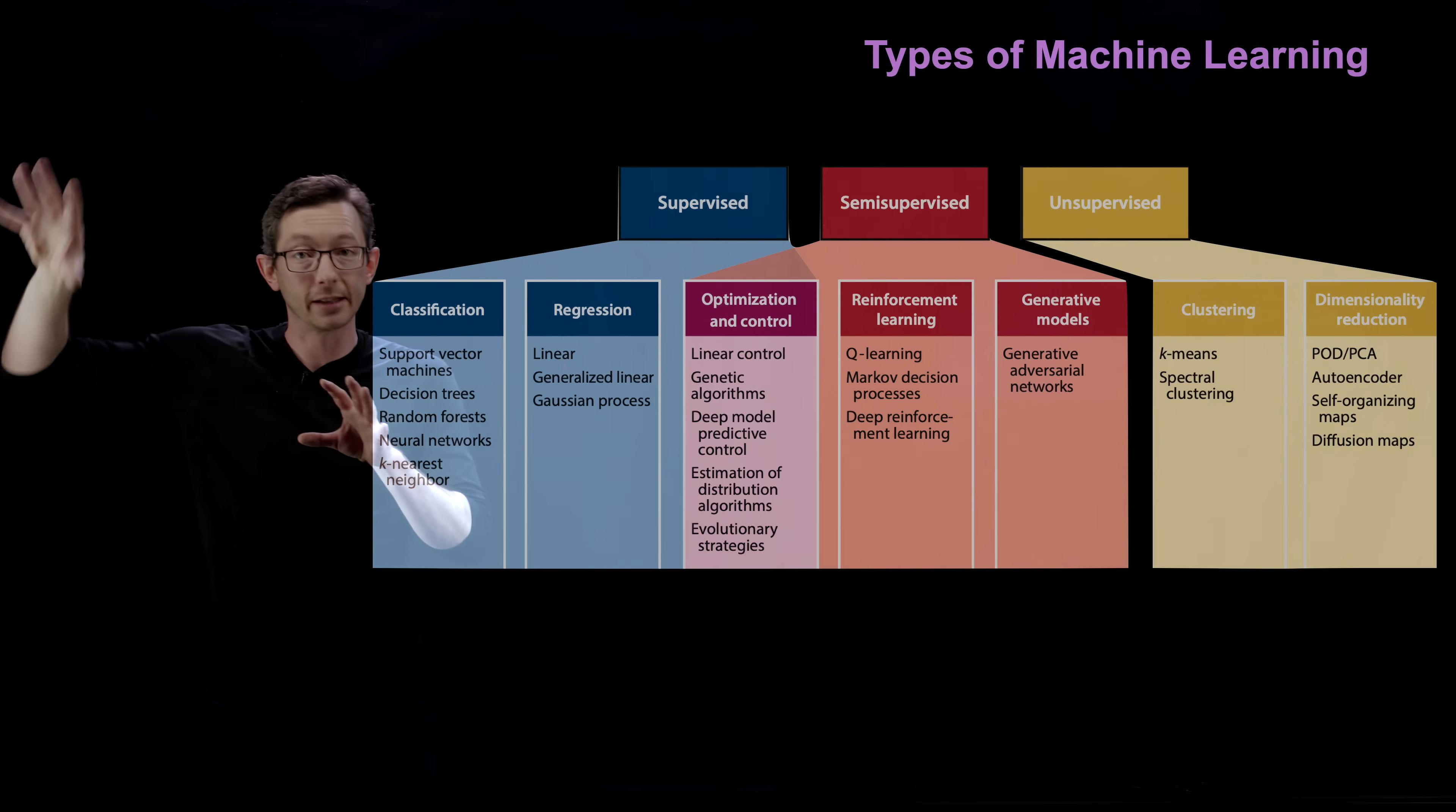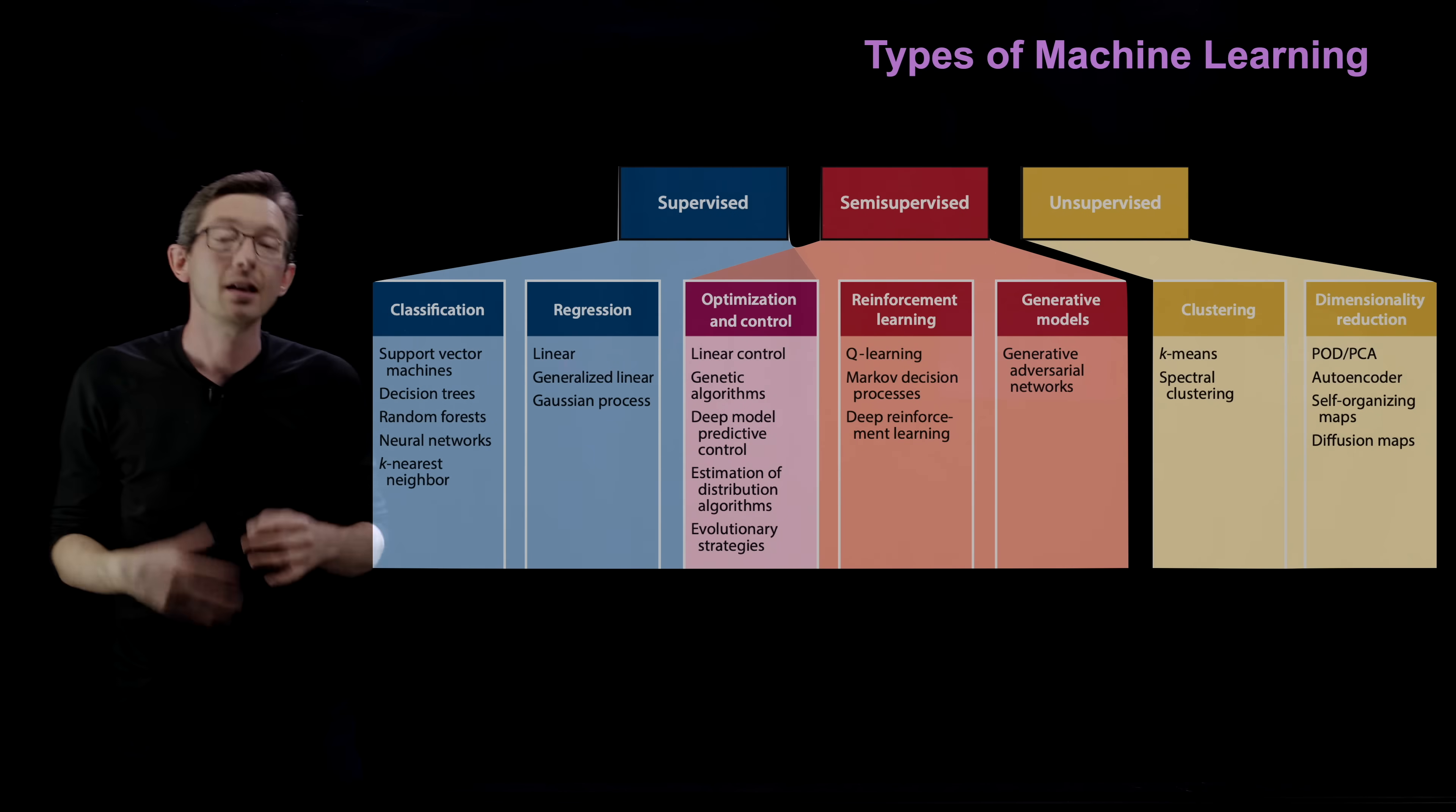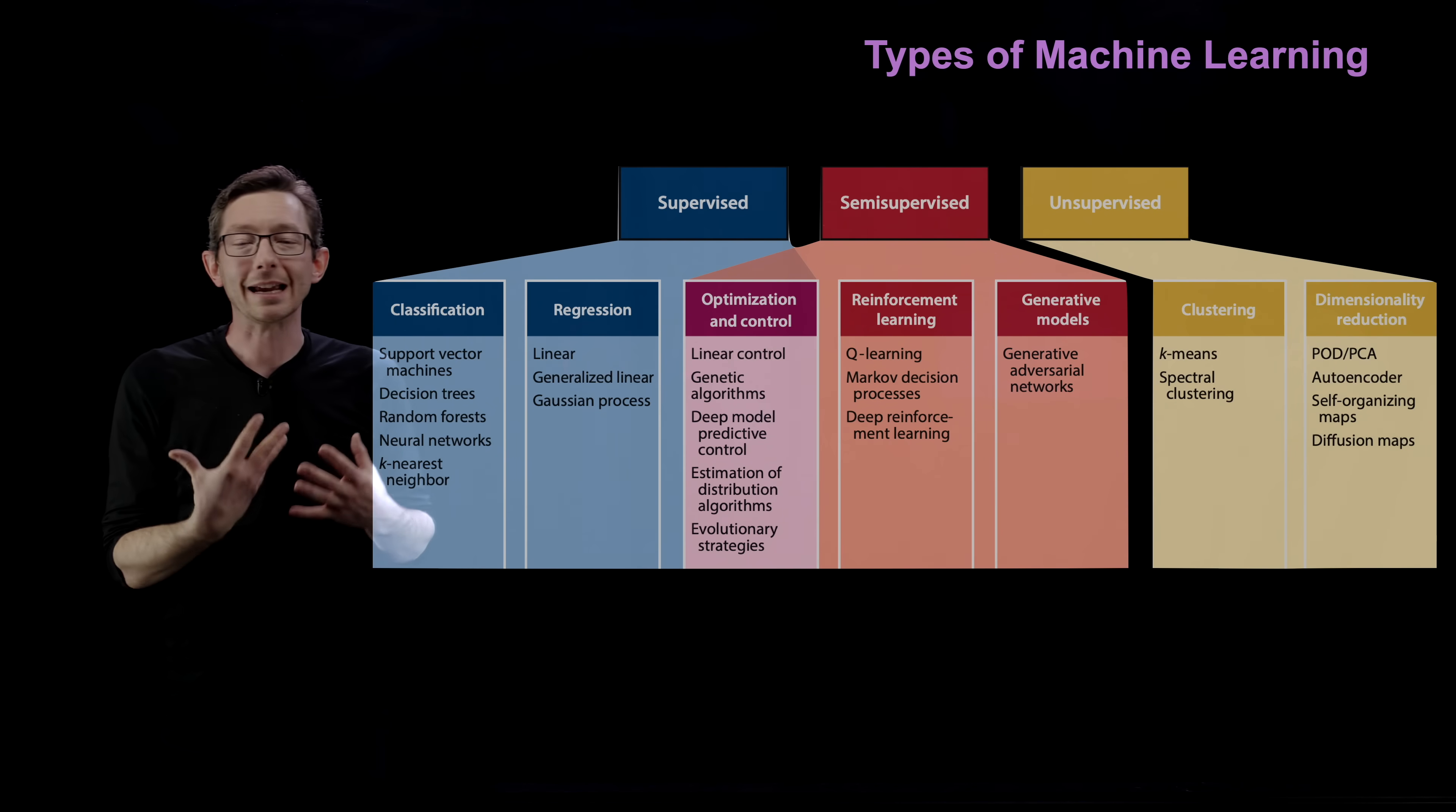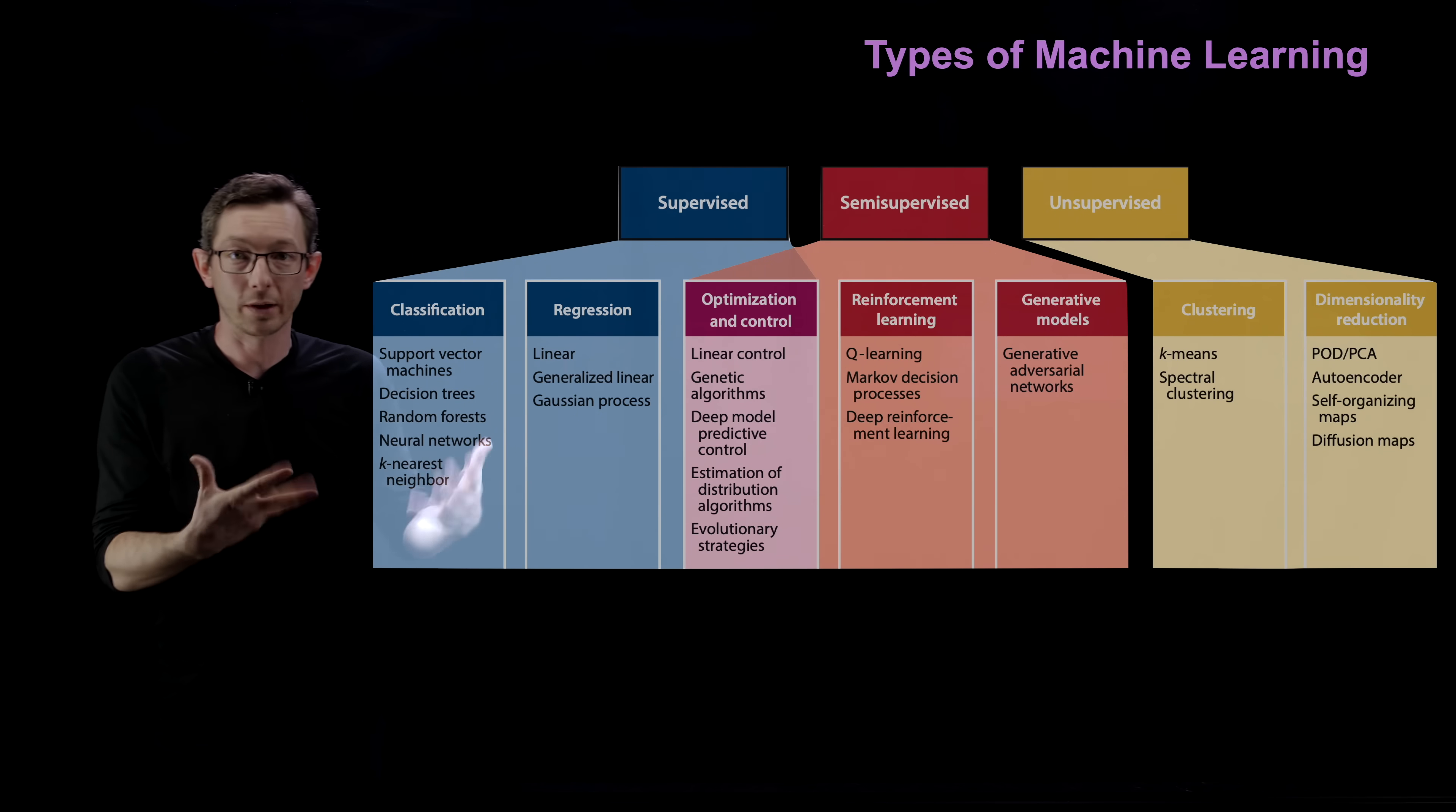But without the labels, this would be more of a clustering algorithm. Maybe I would learn a cluster that mostly corresponds to dogs and another cluster that mostly corresponds to cats. But it's a different task. This is more like data mining. From that data, what are the patterns without knowing the labels?